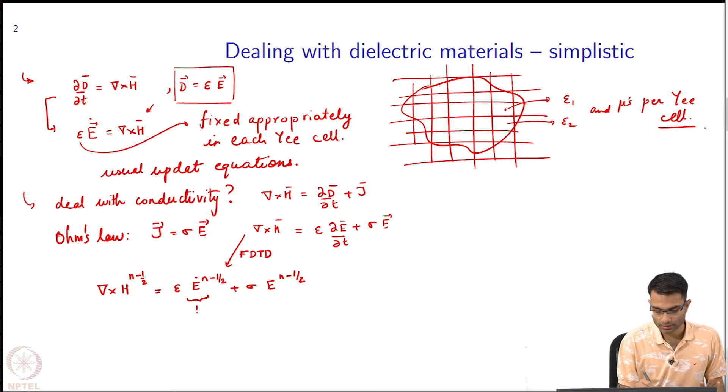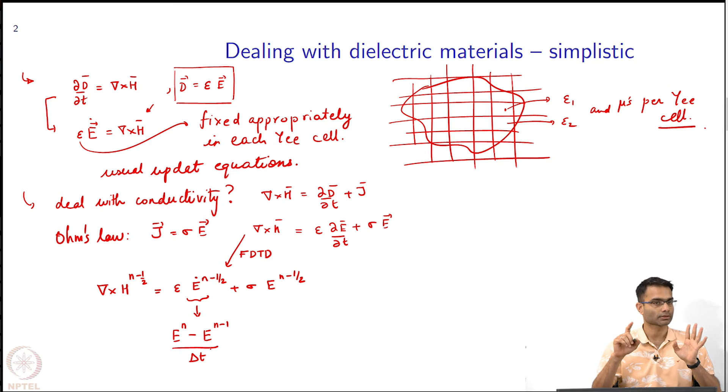This is not a problem because I am implementing this by finite differences. What is this actually amount to? E n minus e n minus 1 by delta t, finite difference in time, and the approximation is most accurate at n minus half. It is consistent. Do you agree with me so far?